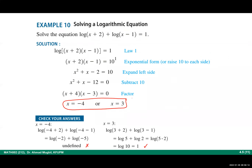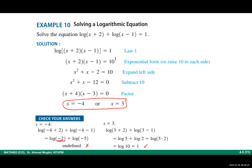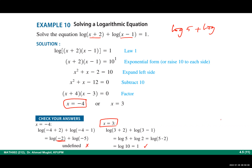Go to the original equation and check x equals negative 4. Substituting gives log(−2), which is undefined — so x equals negative 4 is rejected. It only takes one undefined term to disqualify a solution. Now check x equals 3: you get log(5) + log(2) = log(10) = 1, which equals the right-hand side. So x equals 3 is the only valid solution.